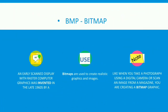The next topic is BMP — Bitmap. An early scan display with raster computer graphics was invented in the late 1960s. Bitmaps are used to create realistic graphics and images — for example, when you take a photograph using a digital camera or scan an image from a magazine, you are creating a bitmap graphic.